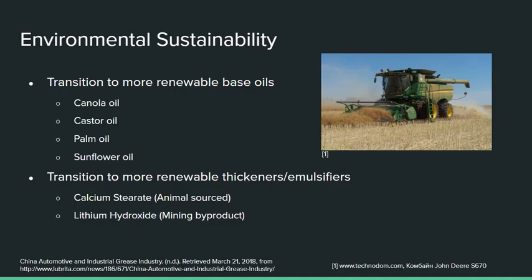Environmental sustainability is a big concern due to the 86 million metric tons of grease used annually. Ways we can improve sustainability here would be to use natural or organically-based oils, such as growing crops like castor, canola, palm, and sunflower. We can also improve environmental sustainability through the use of more renewable thickeners.